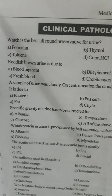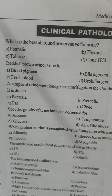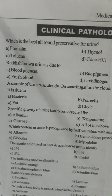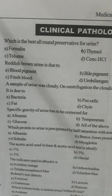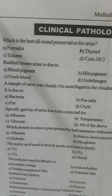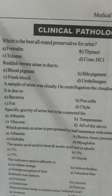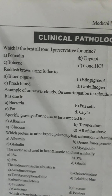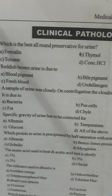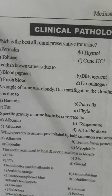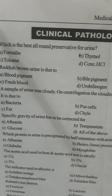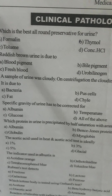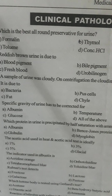Question number four: specific gravity of urine has to be corrected for — Option A: albumin, Option B: temperature, Option C: glucose, Option D: all of the above. The answer is Option D, all of the above.